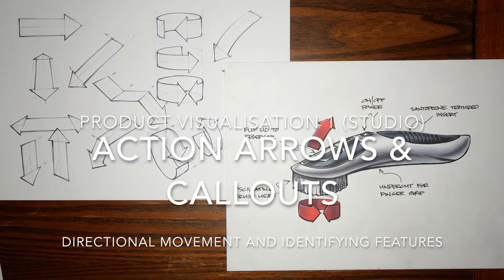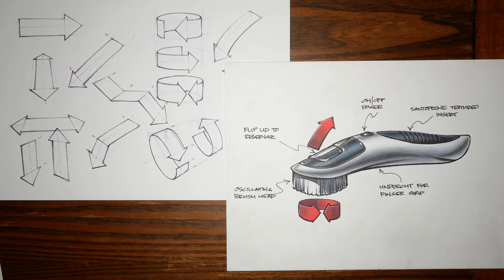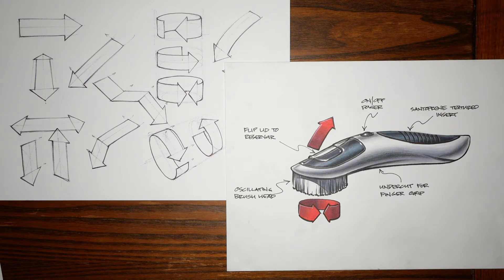Hi again everyone. This is the fourth and last weekly exercise for the studio module and this week we are going to cover action arrows to help communicate directional movement and you will be applying these to your product sketches where you have a feature that has some kind of movement.